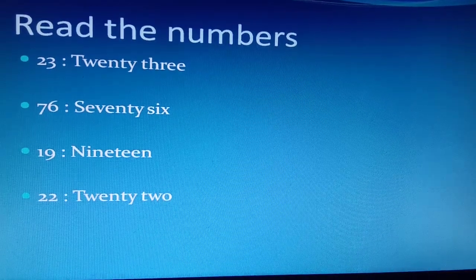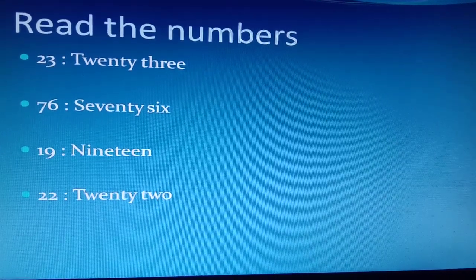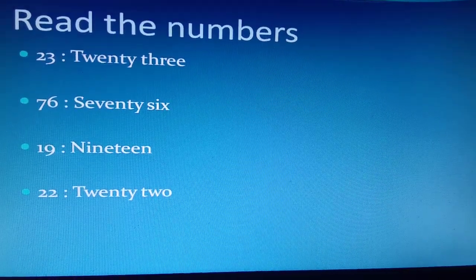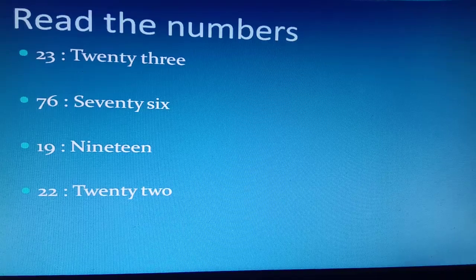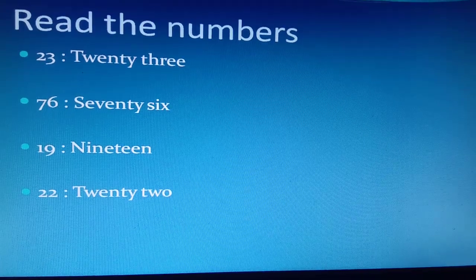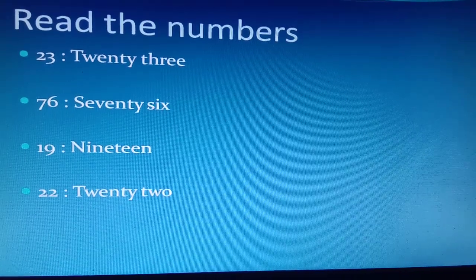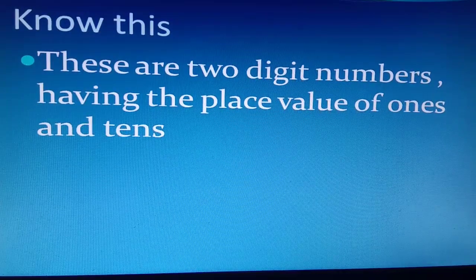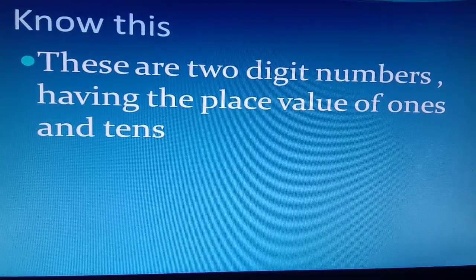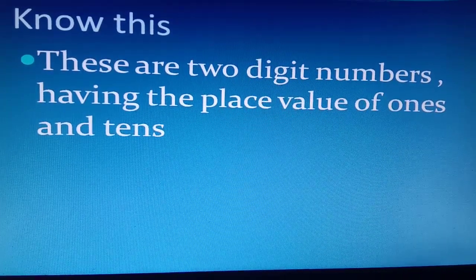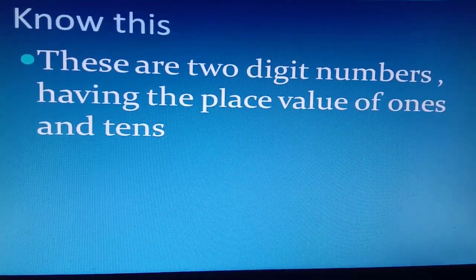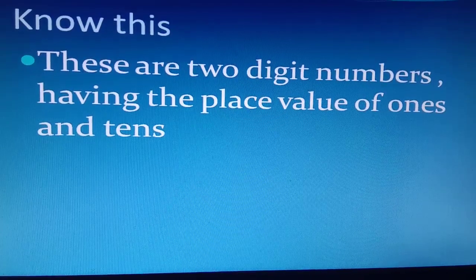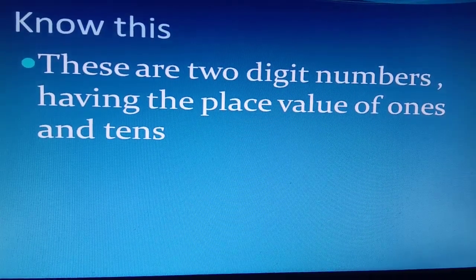Read the numbers: 23, 76, 19, 22. Know this — these are two digit numbers having place value of ones and tens.